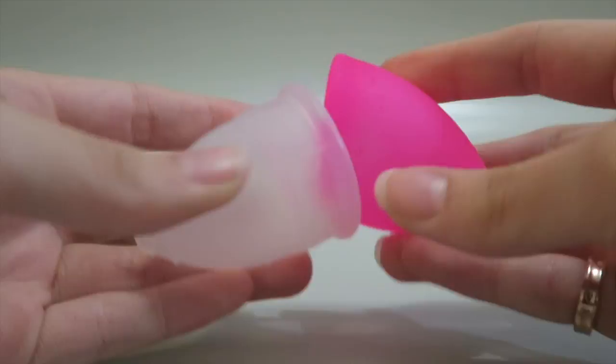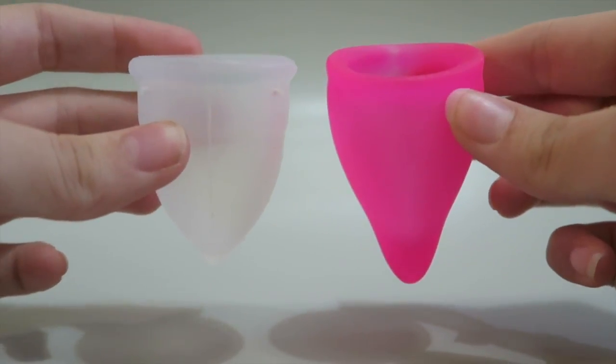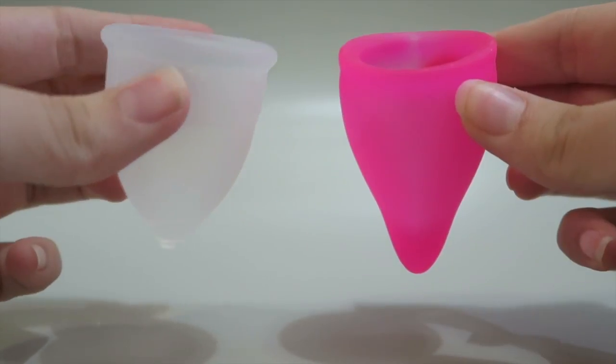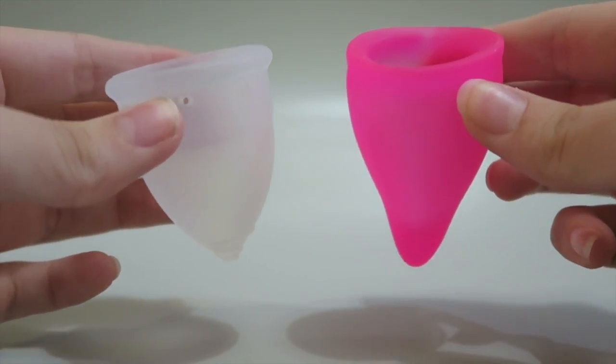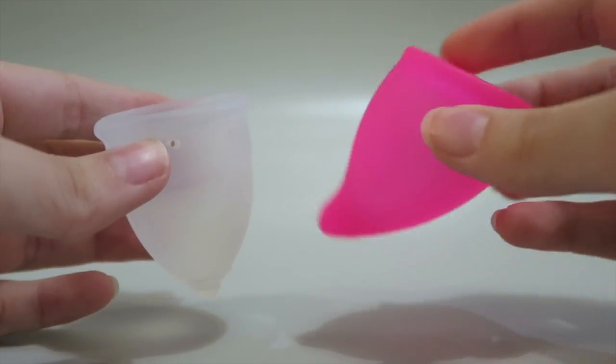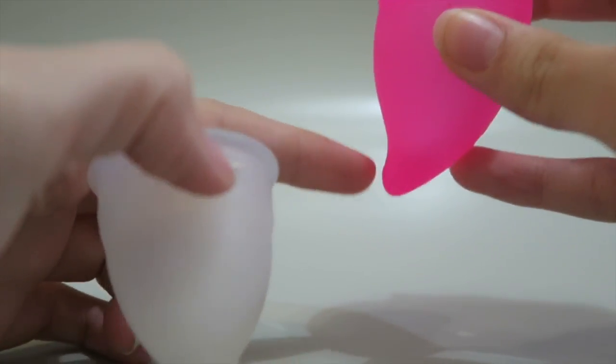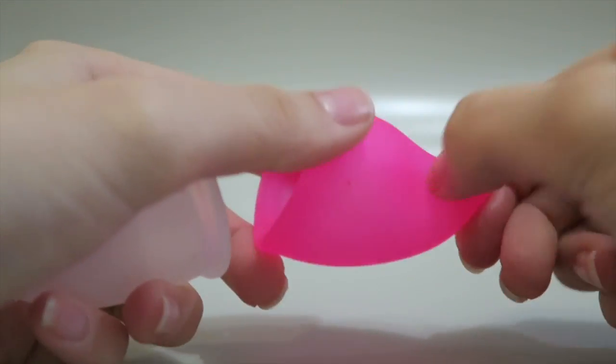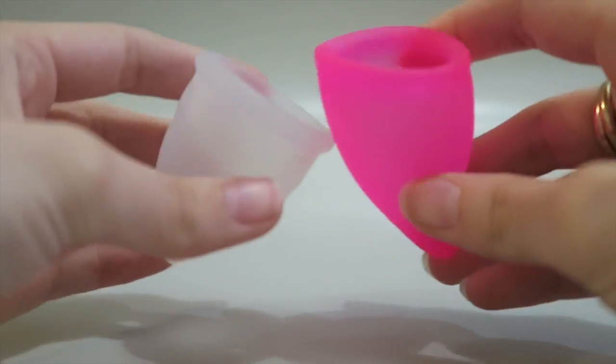First of all, you can see from the shape of the cups that the Organic Cup is the same shape all the way around, it's this sort of tulip shape, whereas the Fun Cup is, I like to call it a gnome hat. It's got an interesting shape here where it's designed so that you can kind of hook your thumb onto it and pull out the cup when it's inserted.